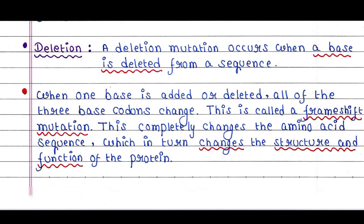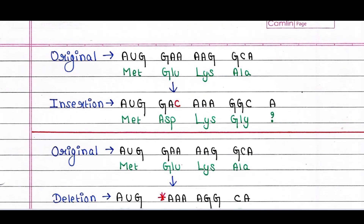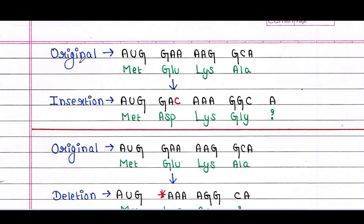Here is the example. Starting with the original sequence, an insertion mutation occurs — the base C is added in extra, and the whole codon sequence changes. This changes the reading frame of the sequence, hence it is called a frameshift mutation.